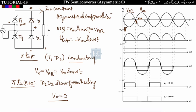Since D3 is conducting from pi to pi plus alpha, terminal B is at plus and A is at minus, so T1 stops conducting. The conduction angle of T1 is from alpha to pi only, giving a conduction angle of pi minus alpha. From alpha to pi the output voltage follows the supply voltage, and from pi to pi plus alpha D2 and D3 are freewheeling so the output voltage is zero.